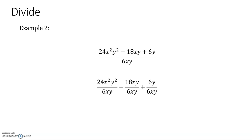24x squared y squared divided by 6xy, minus 18xy divided by 6xy, plus 6y divided by 6xy. 24 divided by 6 is 4; x squared y squared divided by xy is xy, so our first part is 4xy. Minus: 18 divided by 6 is 3, xy divided by xy is 1, so it's minus 3. Plus: 6 divided by 6 is 1, but y divided by y is 1 and we still have an x in the denominator. So the answer is 4xy minus 3 plus 1 over x. Make sure that x stays in the denominator.